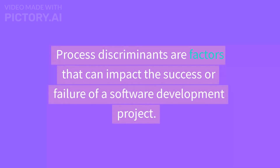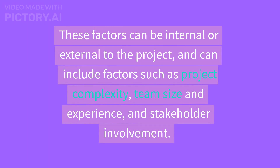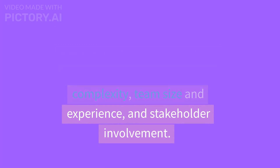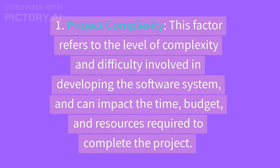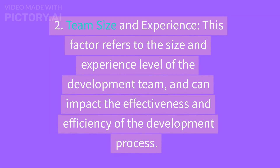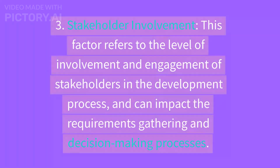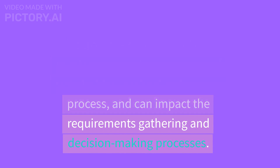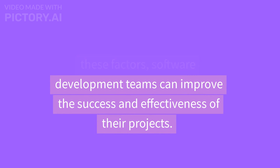Process Discriminants are factors that can impact the success or failure of a software development project. These factors can be internal or external and include project complexity, team size and experience, and stakeholder involvement. Examples include: 1. Project Complexity — the level of complexity involved in developing the software system, which can impact time, budget, and resources. 2. Team Size and Experience — the size and experience of the development team, which can impact effectiveness and efficiency. 3. Stakeholder Involvement — the level of engagement of stakeholders, which can impact requirements gathering and decision-making. By understanding these factors, teams can improve the success of their projects.